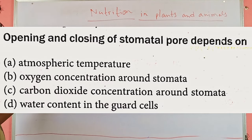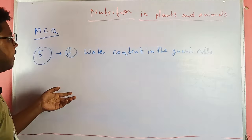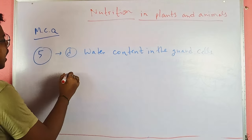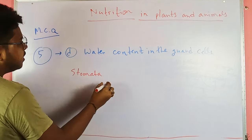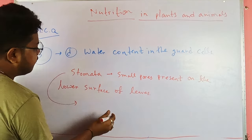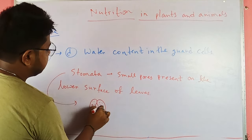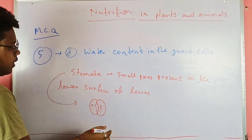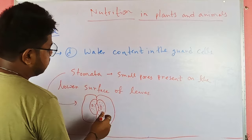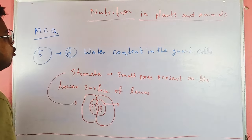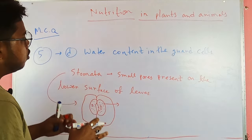The next question asks which condition determines the opening and closing of stomata. The correct answer is the water content present in the guard cells. Guard cells are components of stomata — small pores on the lower surface of leaves — and each stoma has two guard cells, each containing a nucleus and cytoplasm.